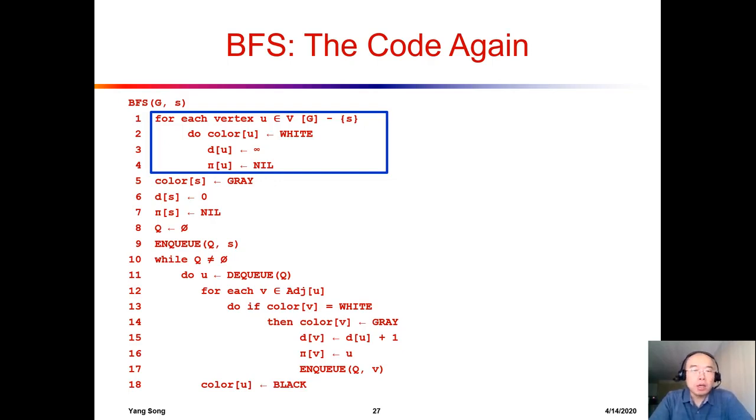So for this part, it's very clear that it is O(V). Why? Because we are touching all the nodes, right? So depending on how many nodes we have, that is how many iterations we are going to do. So the first iteration, that is O(V). And then for line 5, line 6, and all the way to line 9, they are all O(1)s. That's very clear because they are all primitive steps.